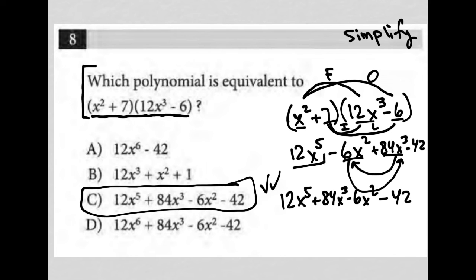And again, we knew that immediately just by doing the very first step of simplification, because choice C is the only answer that has the proper power. It has 12x to the fifth. x squared times x to the third is equal to x to the fifth, because when you multiply exponents, you add the exponents together. So when you multiply terms that have exponents, I should say, you add the exponents together.